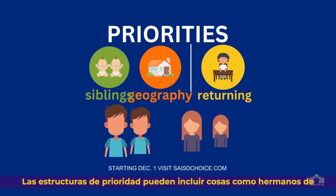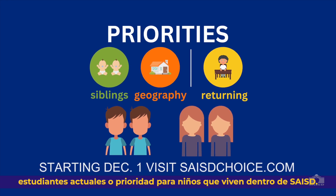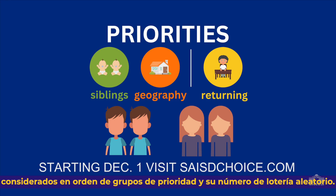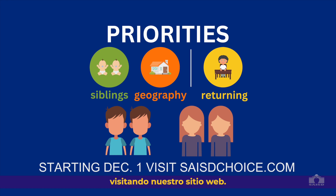Priority structures might include things like siblings of current students or priority for children living within SAISD. If there are more applicants than available seats, applicants will be considered in order of priority groups and their random lottery number. You can learn more about priority structures by visiting our website.